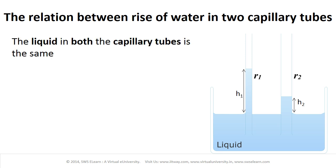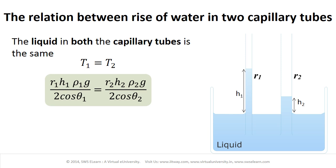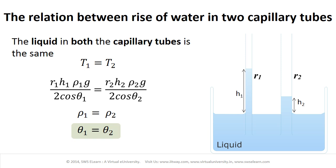As the liquid in both capillary tubes is the same, T1 equals T2. Equating the two expressions: R1 H1 ρ1 G divided by 2 cosθ1 equals R2 H2 ρ2 G divided by 2 cosθ2. Since the liquid is the same, ρ1 equals ρ2 and θ1 equals θ2. Cancelling identical terms from both sides gives R1 H1 equal to R2 H2.